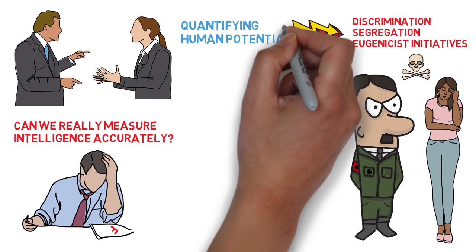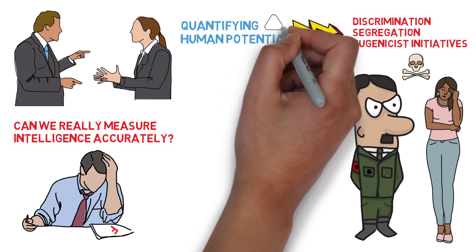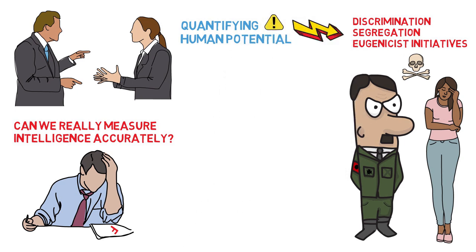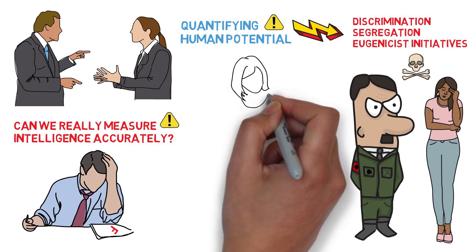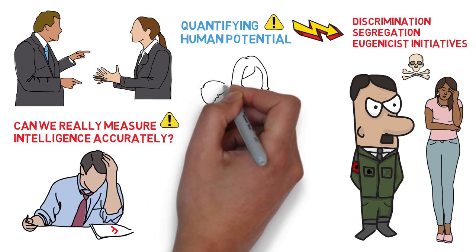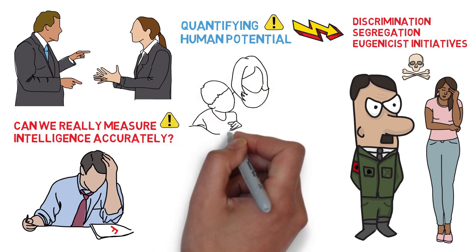These atrocities remind us that misconception of unique intelligence and extreme quantification of human potential is dangerous. Today, we can safely assume that there are multiple forms of intelligence and measuring them accurately remains a theoretical, practical and ethical challenge.